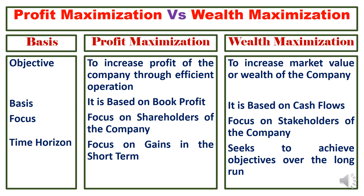When it comes to the basis, profit maximization is based on book profit, whereas wealth maximization is based on cash flow. There is a difference between book profit and cash flow. Book profit is the amount calculated after considering both notional and actual items of expenditure, whereas cash flow is a pure cash flow.